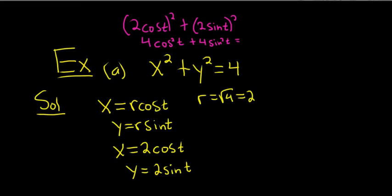And then you can pull out the 4. So when you do that, you're left with cosine squared t plus sine squared t. And that's equal to 1, right? That's the identity that everyone knows. So you get 4 times 1, so you just get 4. So it checks. So these make the equation true, so these will work.